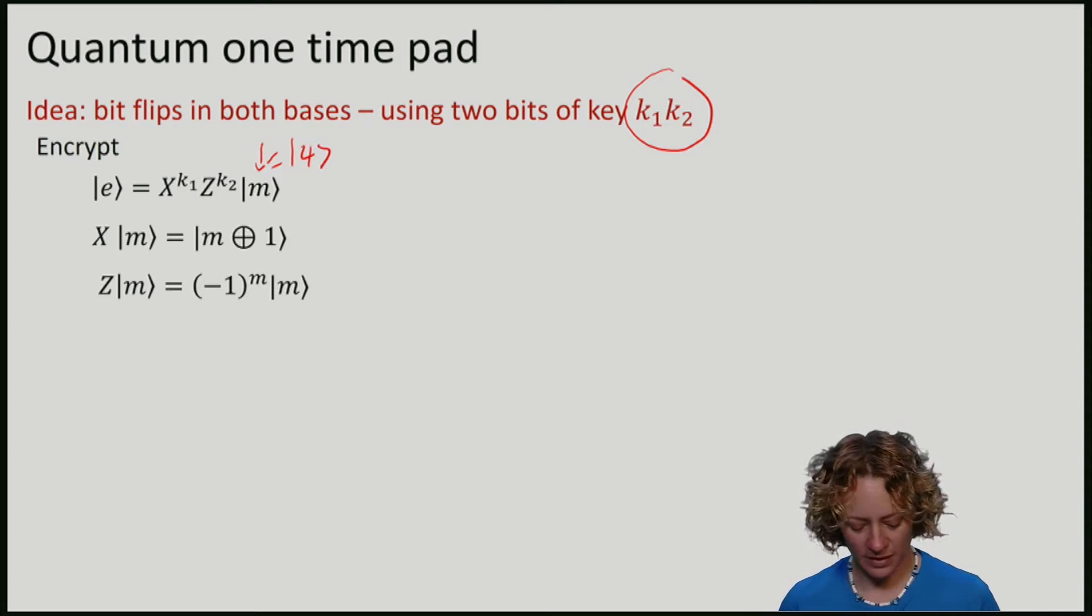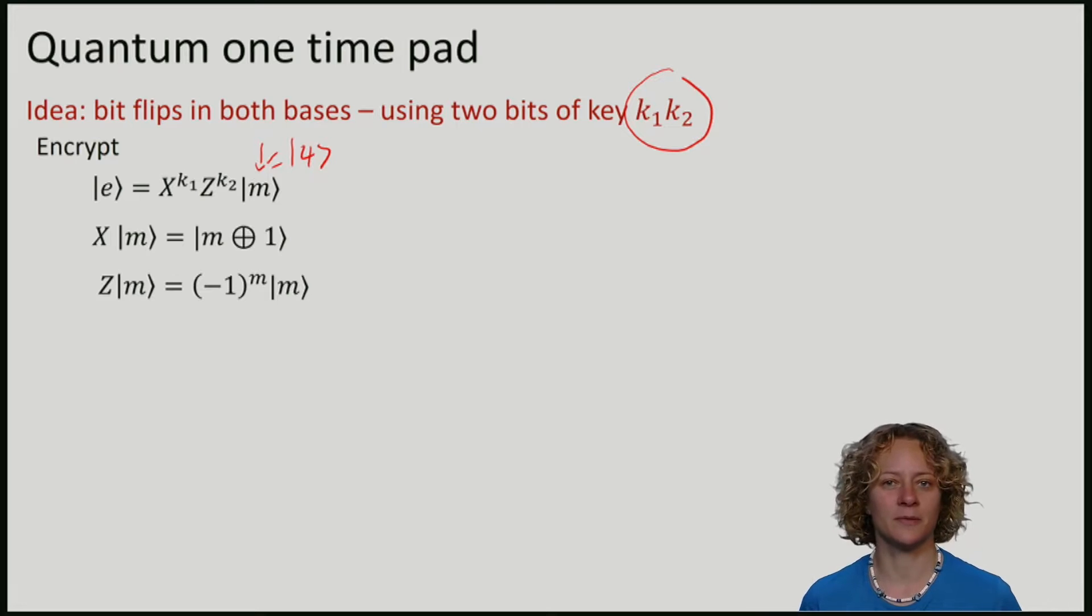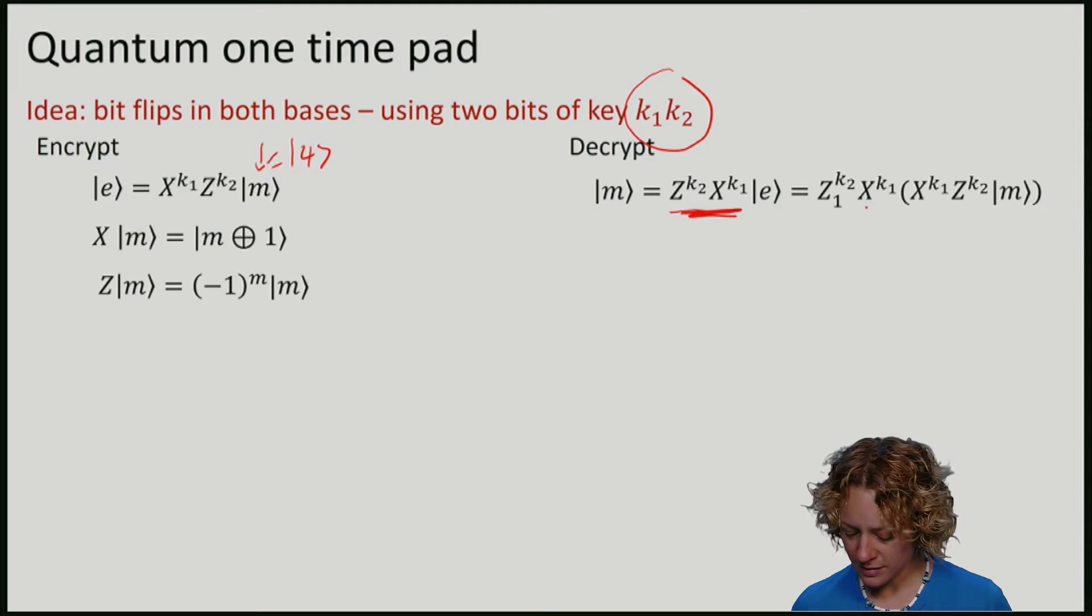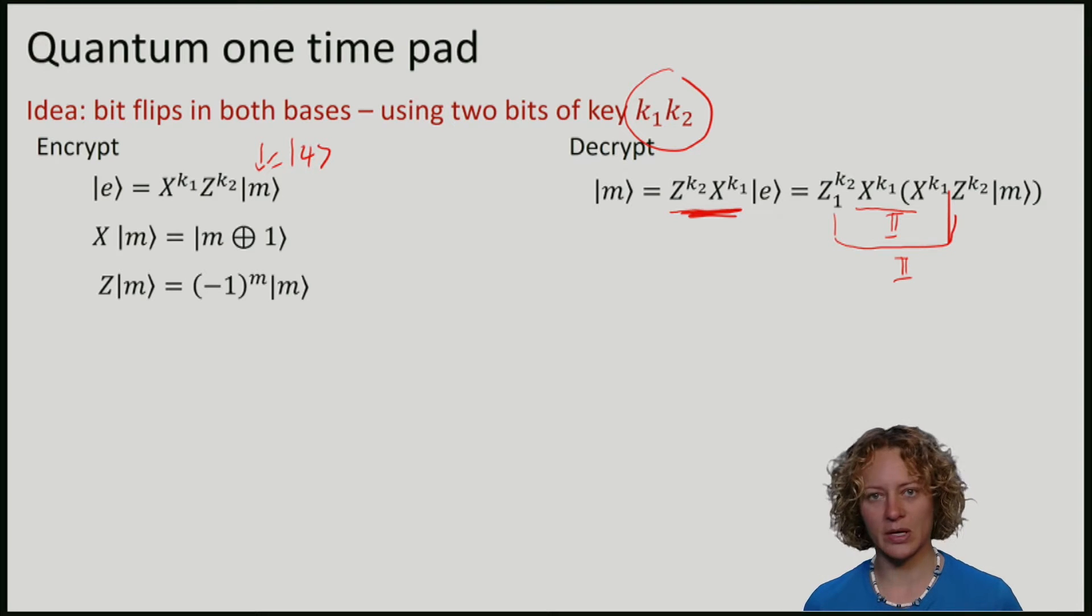Let's first check that the scheme is correct. In other words, Bob can recover the qubit. Unlike Eve, Bob knows the key, of course. And hence, he can simply apply the inverse of the operation that Alice performed. So if I write out E, we have the inverse. Remember that X is both Hermitian and Unitary. This here gives me the identity. And these two together also gives me the identity, which means that we recover M.